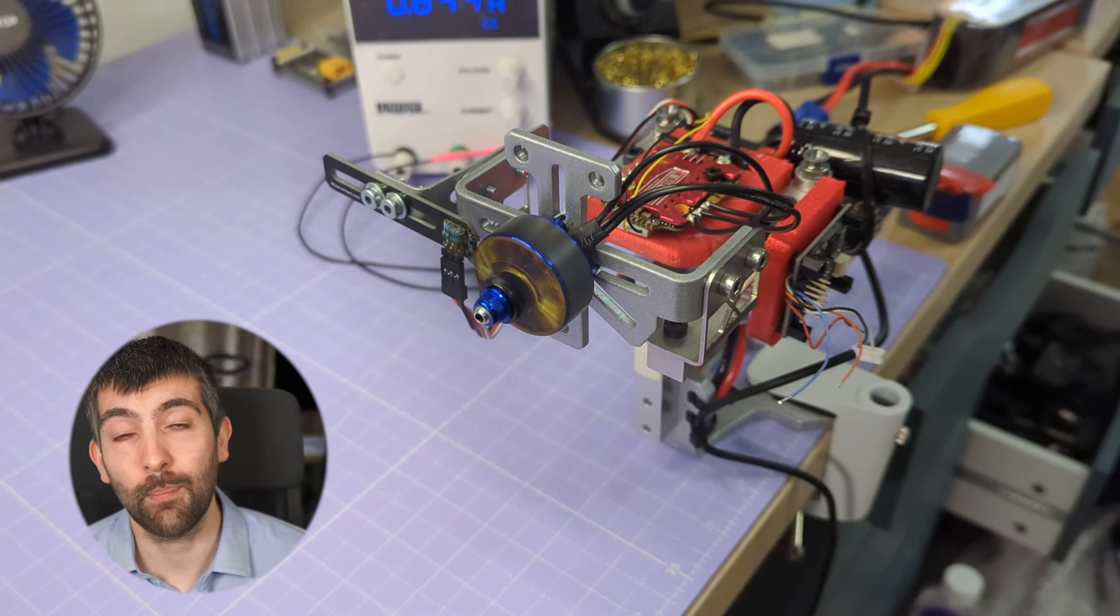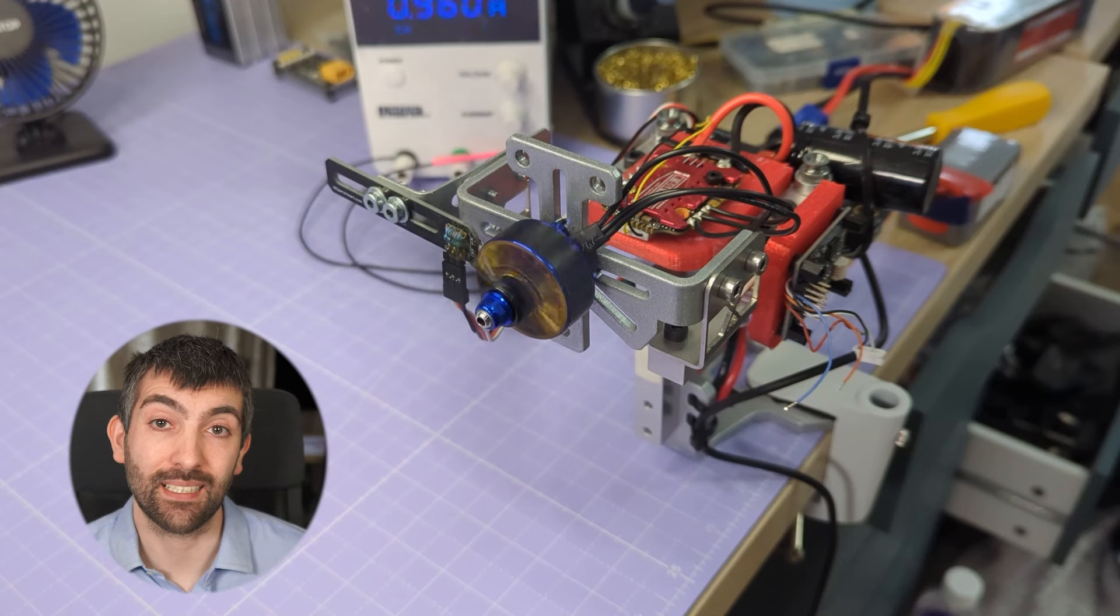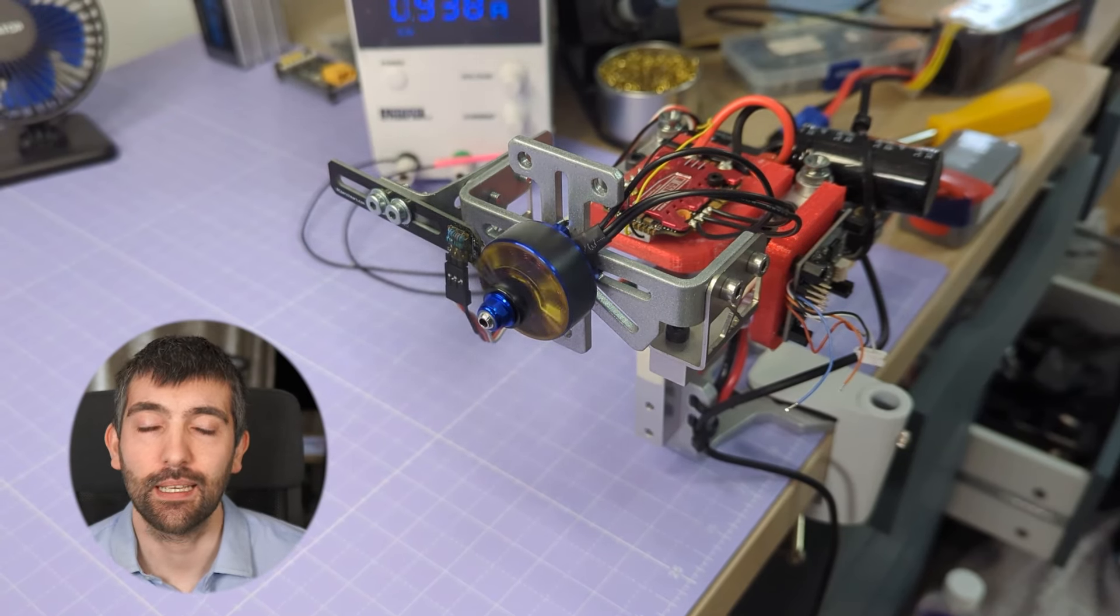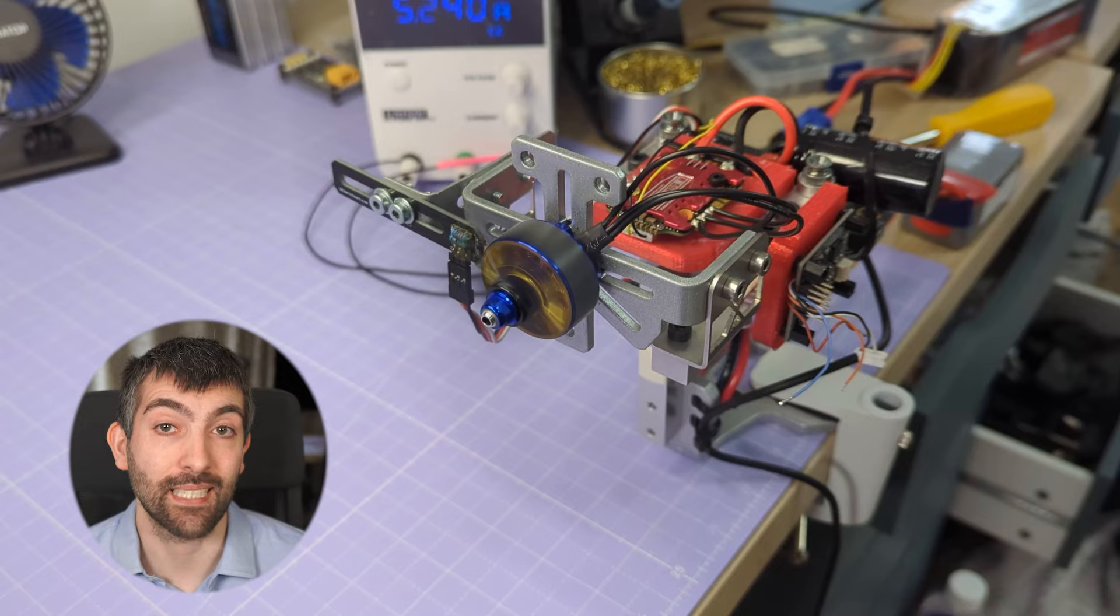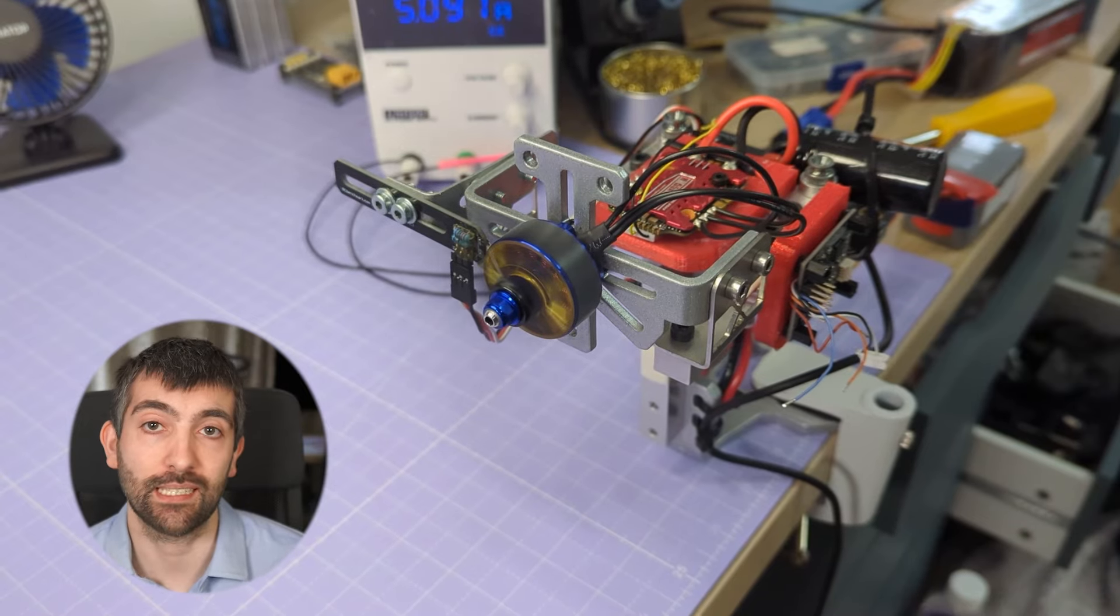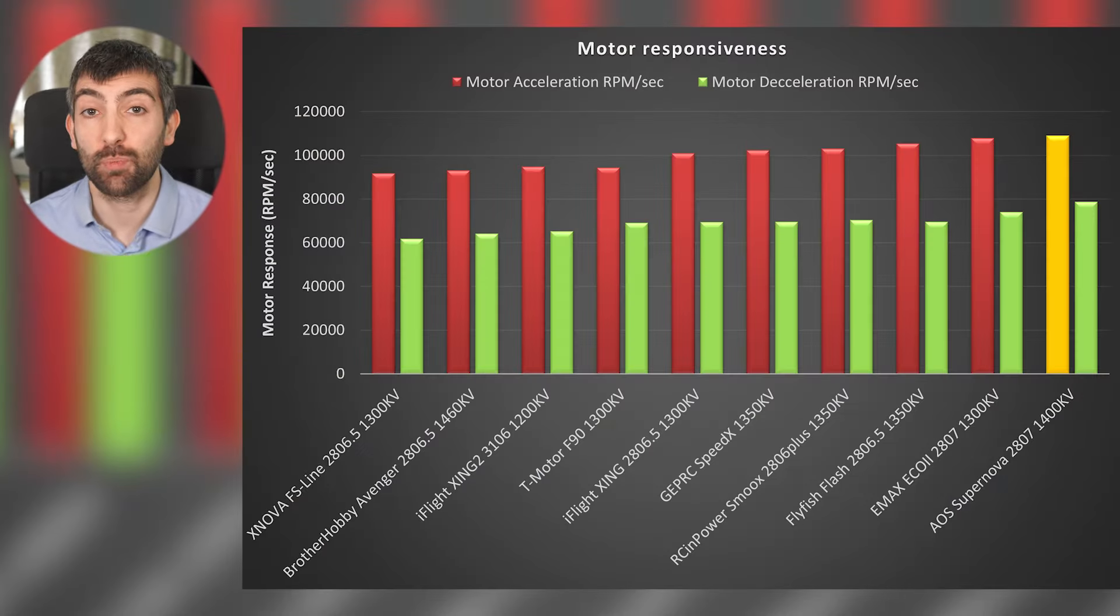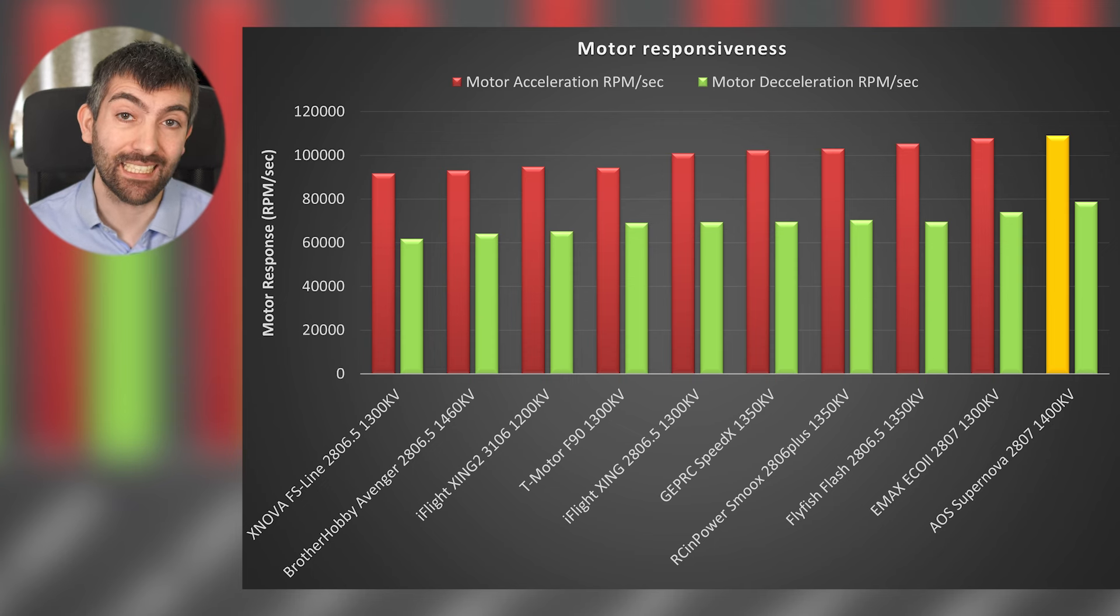I measure the change in rpm and the time taken to accelerate between the different throttle settings to calculate the maximum acceleration and deceleration that the motor is able to generate when powered off a 6s battery at 24 volts. This chart shows the responsiveness of the motor when accelerating and decelerating my test prop.